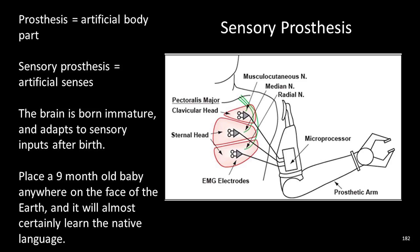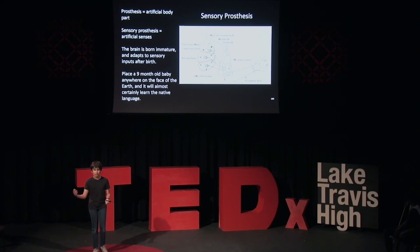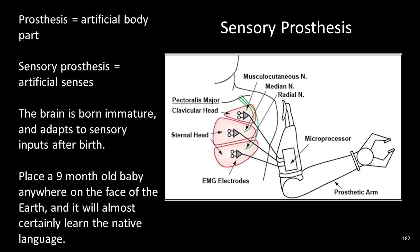Sensory prosthesis. Prosthesis is taking an artificial body part and implanting it into your body, and senses are all senses. Sensory prosthesis is using artificial senses to help people find their way around the world. For example, a baby dropped anywhere on the face of the earth, nine months or younger, will learn the language of that place almost certainly. And this is another example of neuroplasticity.